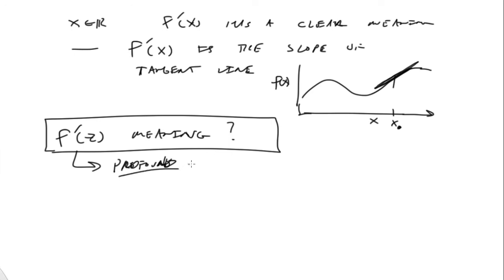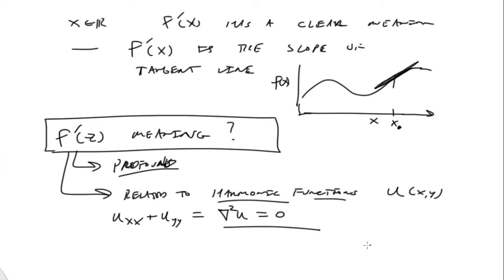But it turns out this is related to harmonic functions. A harmonic function would be something like u of x, y, where uxx plus uyy is equal to, the Laplacian of u is equal to zero. So a harmonic function is a function that solves Laplace's equation. And it turns out that the derivatives of complex variable functions are intimately related with that of harmonic functions. So I'll leave you with that, and we will study that at a later time. Thank you very much.